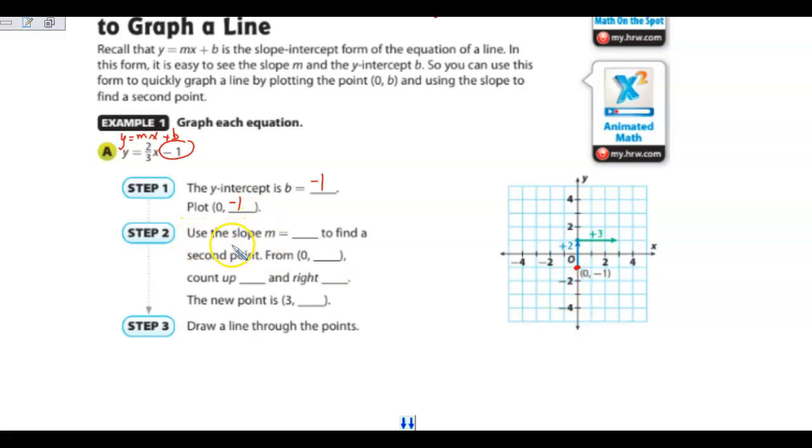We can use the slope, in this case, this is your m, 2/3, to find our second point. So we're going to start from our y-intercept at 0, negative 1, and then we're going to count up 2 and right 3. Because remember, slope is rise over run. If we have 2/3, we're going to go up 2 from this point, so 1, 2, and then we're going to run 3 to the right, 1, 2, 3. That gives us this point right here.